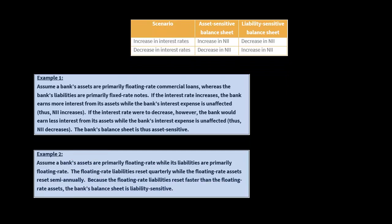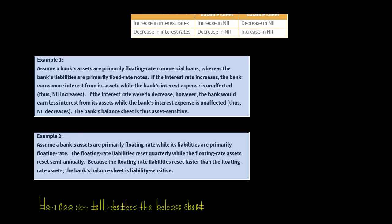Now let's look at a different example. Say that we've got a bank where both assets and liabilities are floating rate. You'd think an increase in interest rates wouldn't have any effect since they're both floating rate — but here's the catch: the floating rate liabilities reset quarterly, whereas the assets reset semi-annually. So the liabilities are going to reset faster than the assets. If there was an increase in interest rates, that's going to lead to a decrease in net interest income, because the liabilities will more quickly reflect that increase in rates than the floating rate assets will. So net interest income takes a hit, and we would say this is a liability sensitive balance sheet.